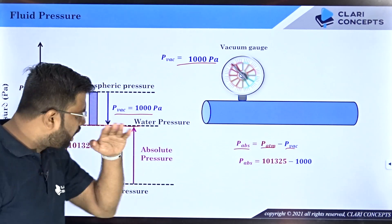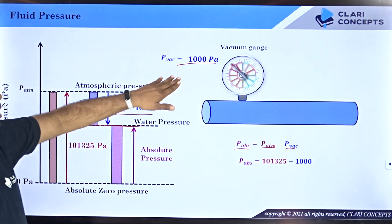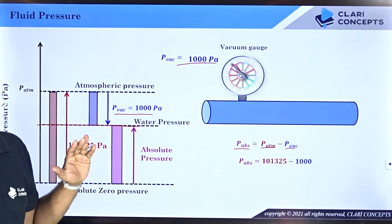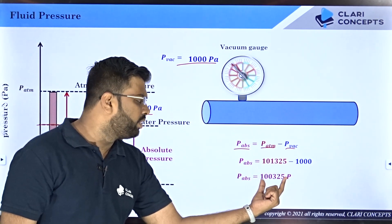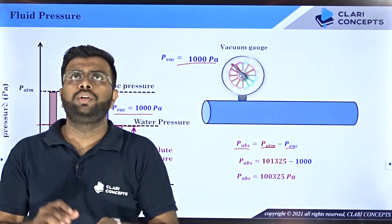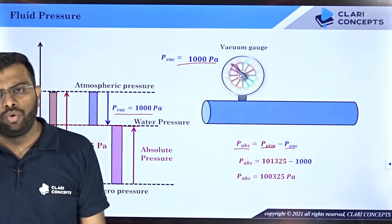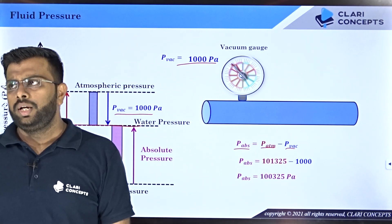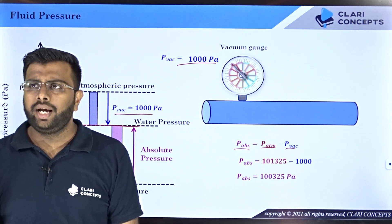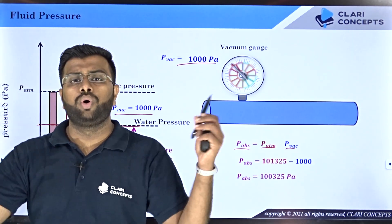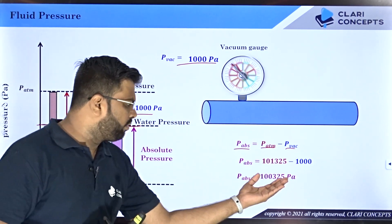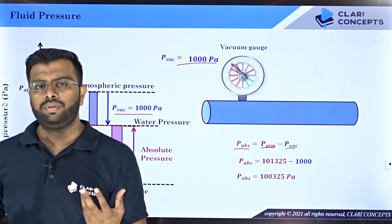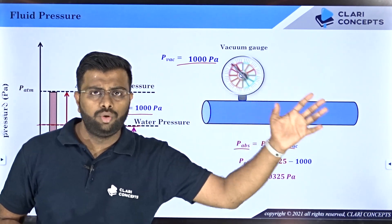Vacuum means the pressure is measured from atmosphere but lower than that. If somebody says pressure is 2000 Pascal vacuum, that means the pressure is 2000 Pascal lower than atmosphere. The actual pressure value is the absolute one only. But we represent it from the atmospheric reference because atmosphere is our reference. When somebody says it is 2 times atmospheric, or 3 times atmospheric, or 1000 Pascal vacuum, you can easily feel whether the pressure will be lower than or greater than atmospheric — which is hard to judge from absolute numbers alone.